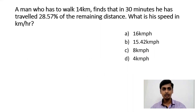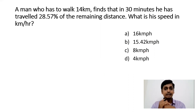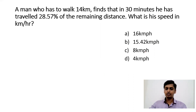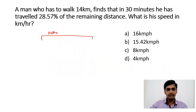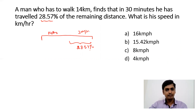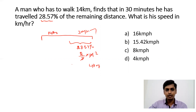Question two: a man who has to walk 14 km finds that in 30 minutes he has travelled 28.57% of the remaining distance. What is his speed in km/h? The total distance is 14 km. Now 28.57% is 2/7, so (2/7) × 14 = 4 km. So in the last 30 minutes he covered 4 km.